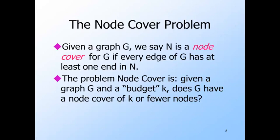Notice that if we had a polytime algorithm for the minimization problem — that is, given a graph, find a node cover of smallest size — then we could prove that the formal node cover problem was in P. Just use the hypothetical polytime algorithm to find a smallest node cover, count the number of nodes in the cover, and see if it is at most K. That means that once we prove the formal node cover problem to be NP-complete, we also know there is no polytime algorithm for the minimization version, unless P equals NP.